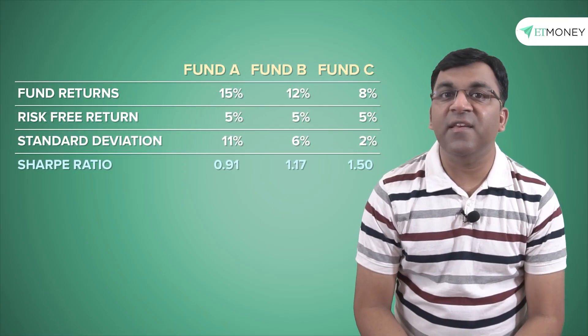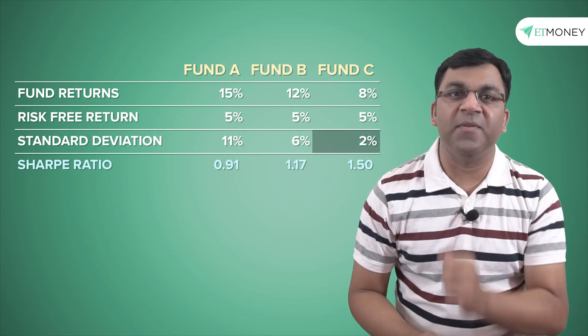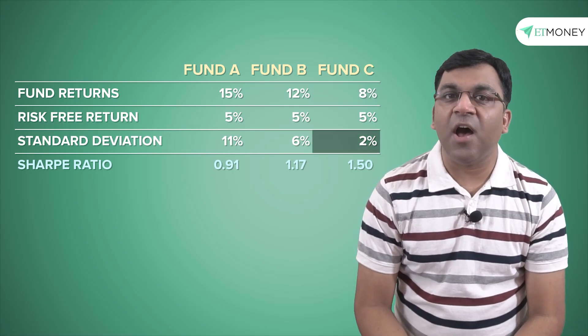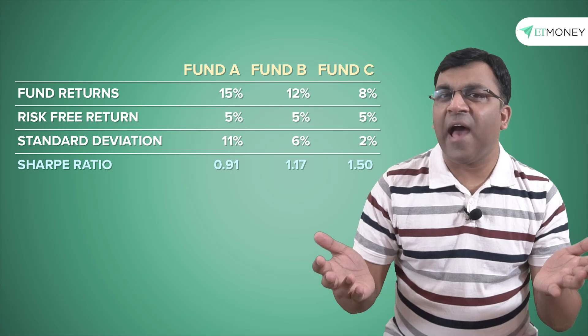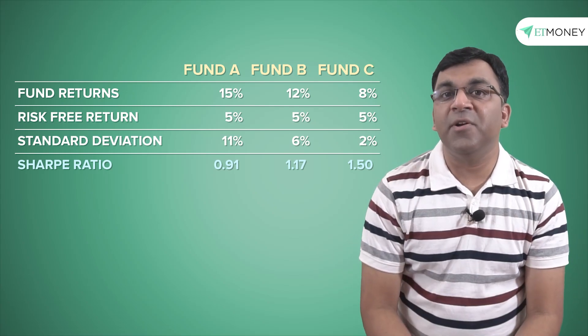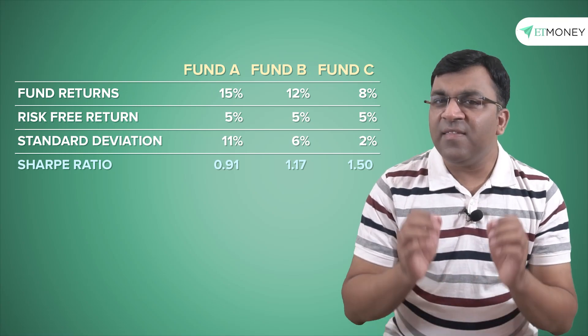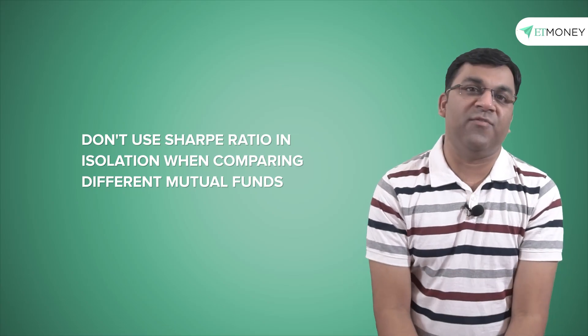For example, it's commonly possible that a fund with low returns and low standard deviation might show a high Sharpe ratio. Like in our illustration earlier, say there is a fund C which offers only 8% returns but comes with a standard deviation of just 2%. In this case, the Sharpe ratio will be 1.5, which is the highest of all three funds, but then you're not really going to be happy with an 8% return. So while the Sharpe ratio is a useful risk measurement tool and one should use it, it's still advisable not to use it in complete isolation, especially when you're comparing different mutual funds.